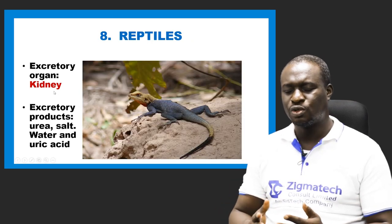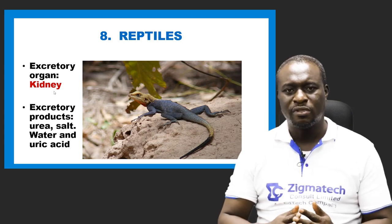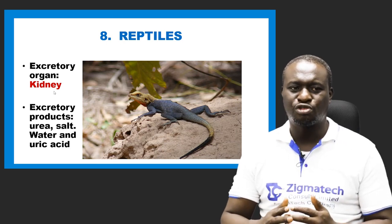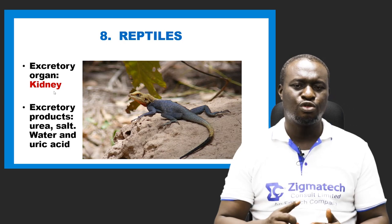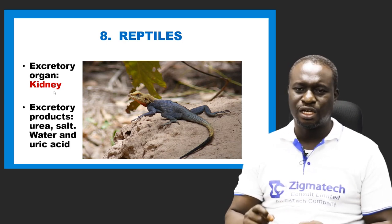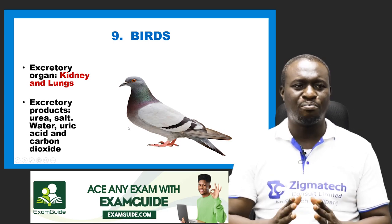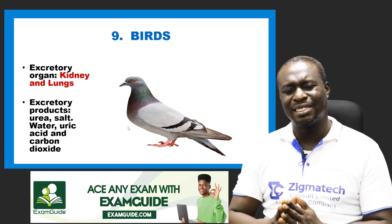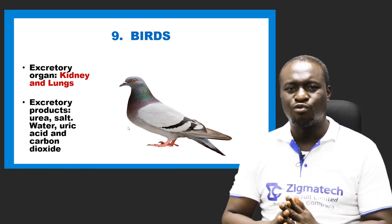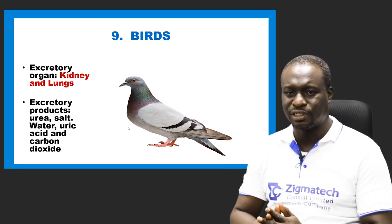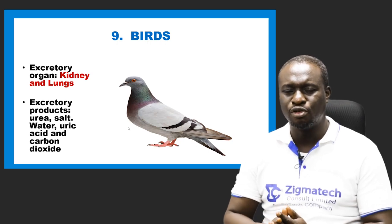Reptiles include lizards, snakes, crocodiles, and geckos. Their excretory organ is the kidney. Their excretory products include urea, salt, water, and uric acid. Number nine is birds. Their excretory organs are the kidney and the lungs. Their excretory products include urea, salt, water, uric acid — removed through the kidney — and carbon dioxide, removed through the lungs.